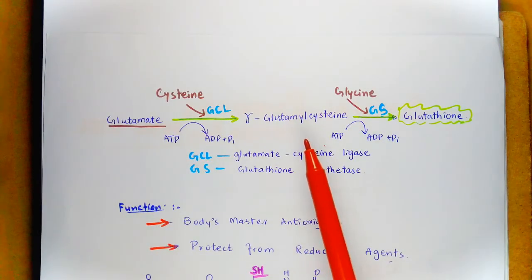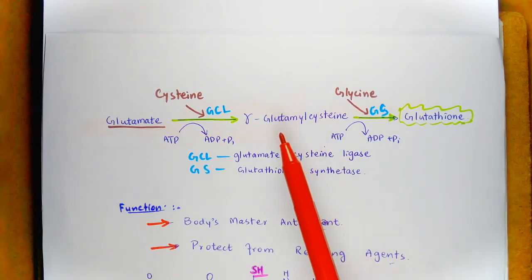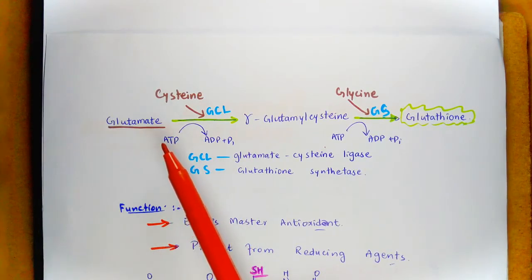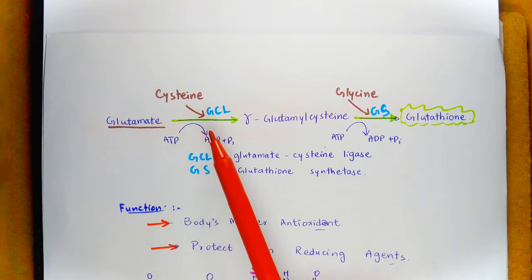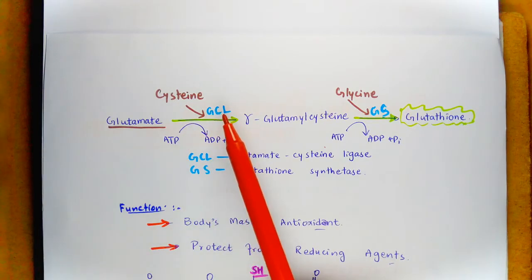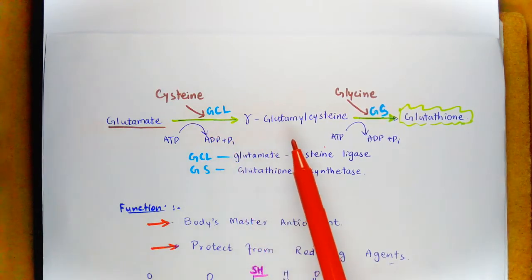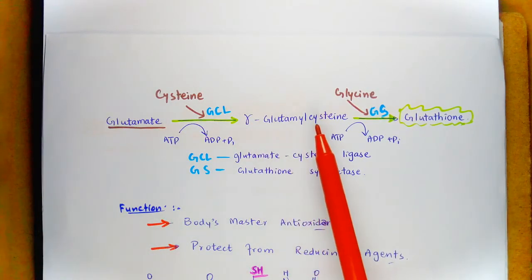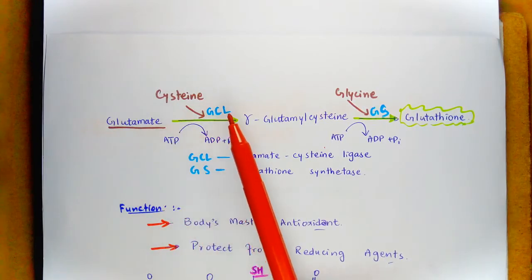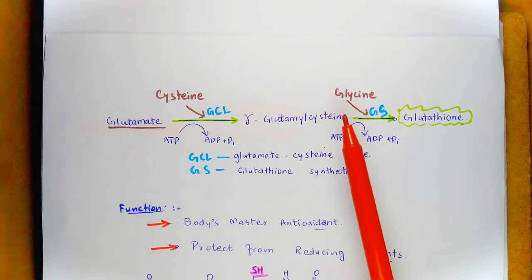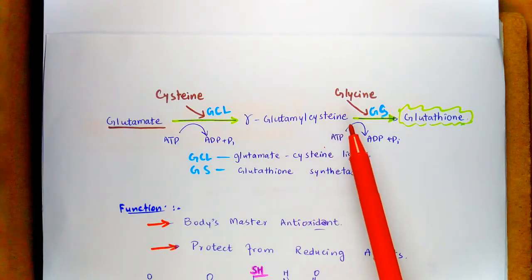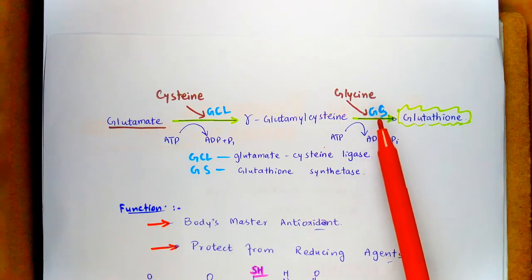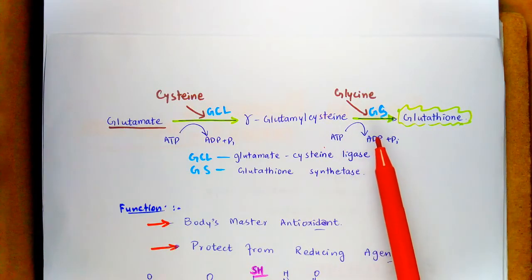Glutathione biosynthesis involves two ATP-dependent steps. In the first step, glutamate and cysteine are involved. This conversion requires the enzyme glutamate cysteine ligase, also called glutamate cysteine synthase, which catalyzes the formation of gamma-glutamyl cysteine. In the second step, glycine is added to the gamma-glutamyl cysteine to form glutathione. This reaction is catalyzed by glutathione synthetase and is also ATP-dependent.